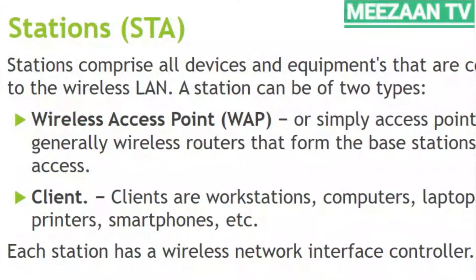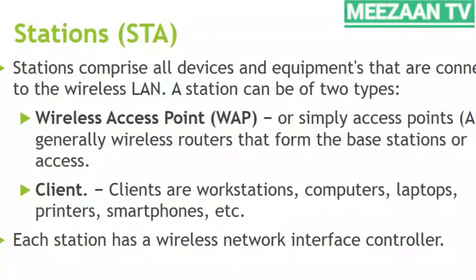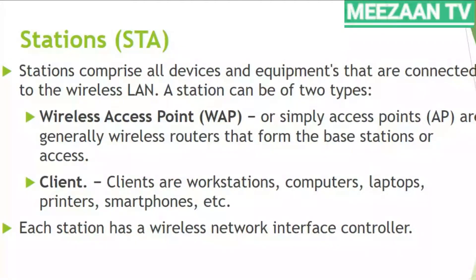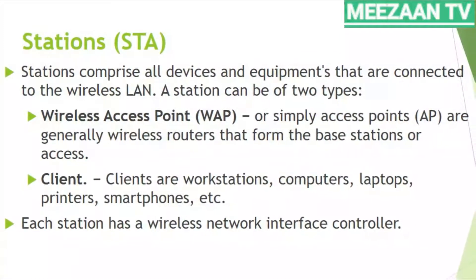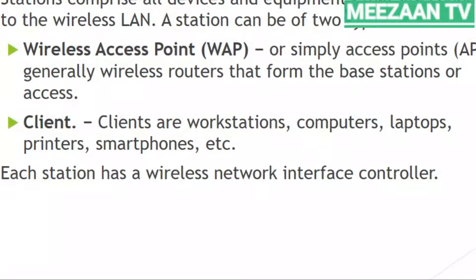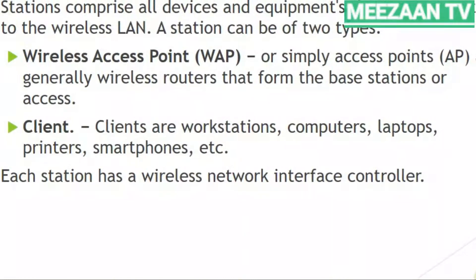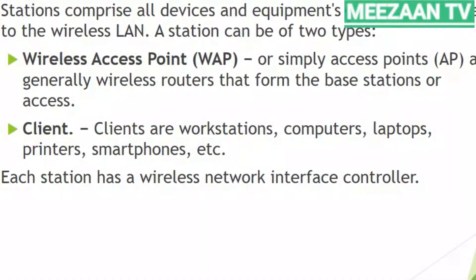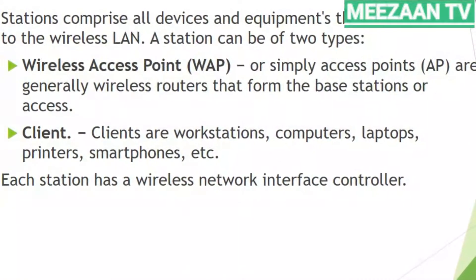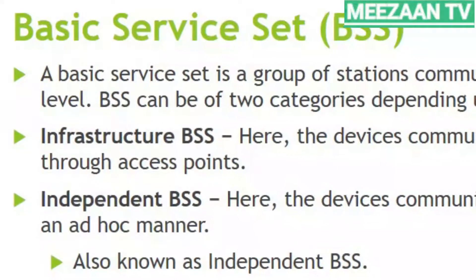Stations in wireless LAN are simply known as STA. A station comprises all devices and equipment connected to the wireless LAN. Stations can be of two types: wireless access points, simply known as AP, which are generally wireless routers, and clients — workstations, computers, laptops, printers, smartphones, etc. Each station has a wireless interface controller; without this controller, no device can communicate through wireless LAN.